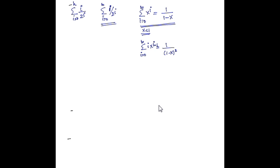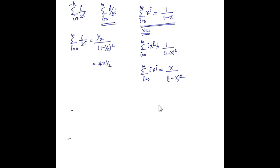When I differentiate, this gives i times x^(i-1), and the summation equals 1/(1-x)^2. Multiplying both sides by x gives the summation from i equals 0 to infinity of i times x^i equals x/(1-x)^2. Now plugging in x equals 1/2: the summation from 0 to infinity of i divided by 2^i equals (1/2) divided by (1 - 1/2)^2. Since 1/(1 - 1/2)^2 equals 4, this gives 4 times 1/2 which equals 2. So the summation of i/2^i from i equals 0 to h is smaller than or equal to 2.